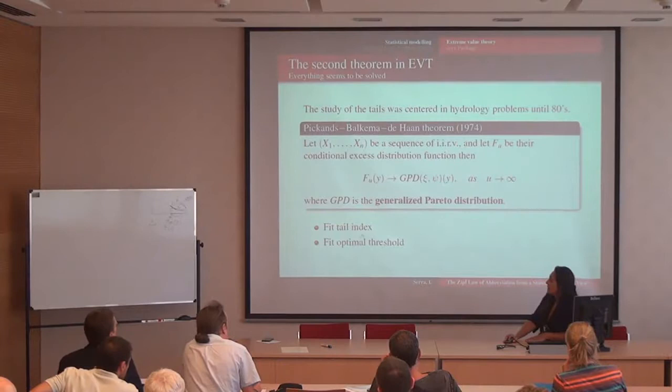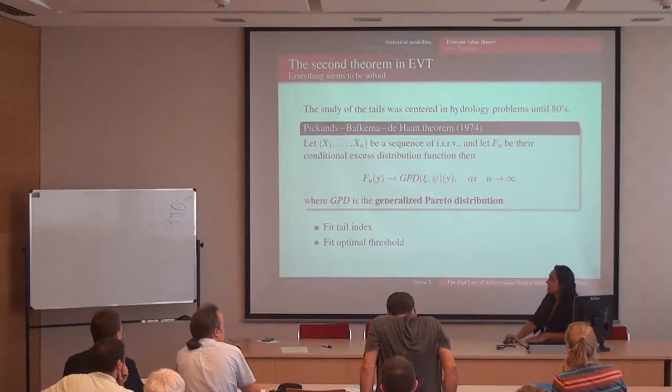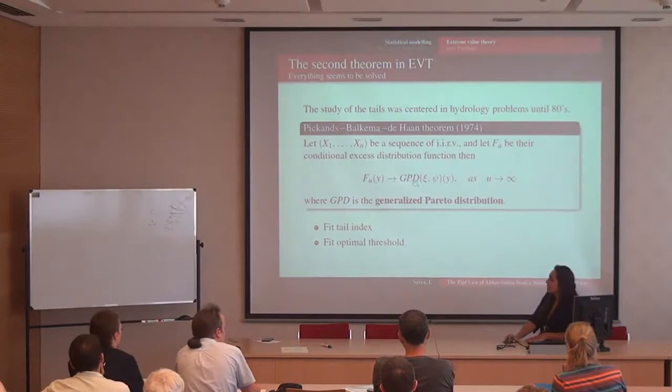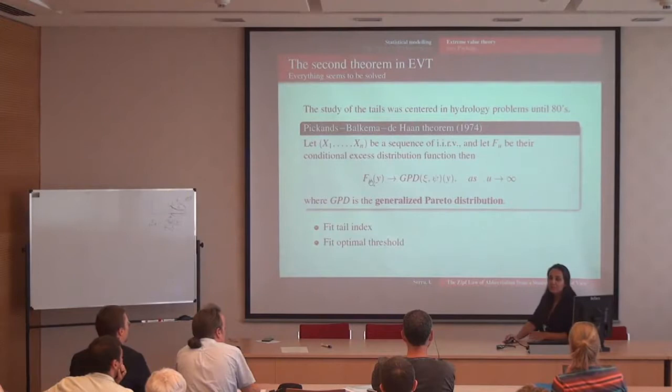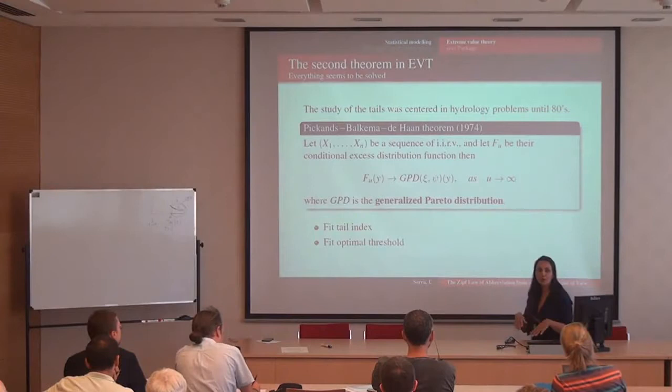The first parameter, chi, is the tail index — from a theoretical approach, it can be known as the slope when you see a power law plot. The other parameter is the scale. From a statistical point of view, there are two problems: first, how to fit this model, which is not easy and there is ongoing research; and second, how to set the optimal threshold. This is like asking where to put the cutoff when computing the tail index.